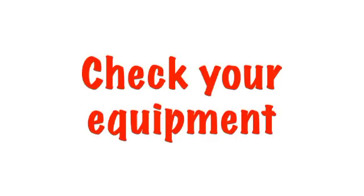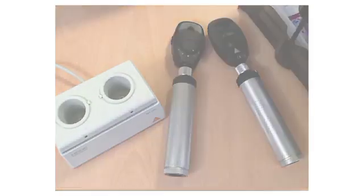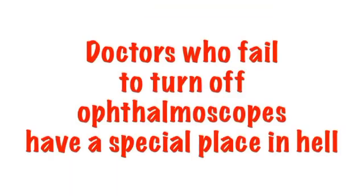First of all, you need to check your equipment and make sure it works before starting your examination. If the batteries are flat or if a colleague has left the ophthalmoscope off its charger, there will be no light and you will not be able to see anything. There's nothing more frustrating than a flat scope, so always make sure that when you finish using this equipment, turn it off and if necessary, return it to its charger.